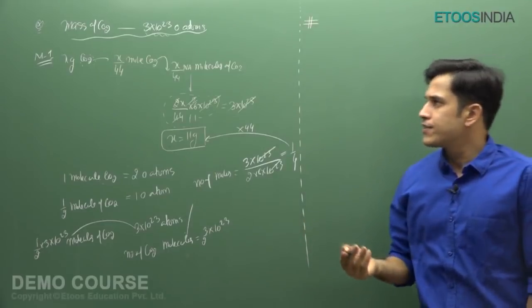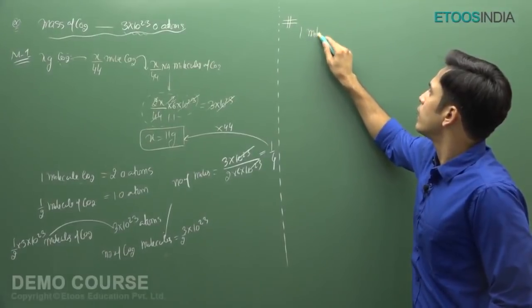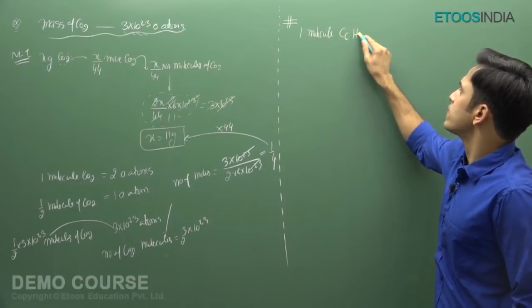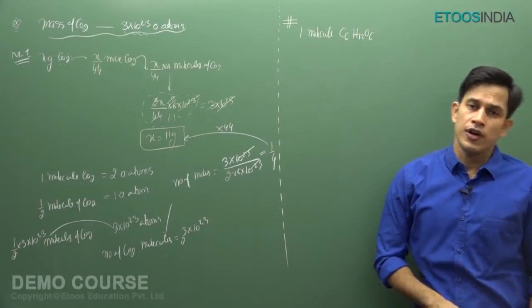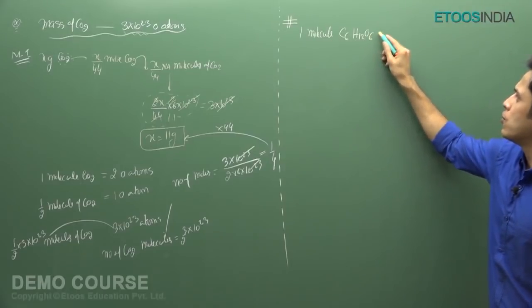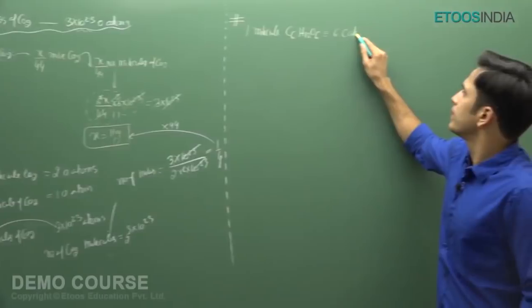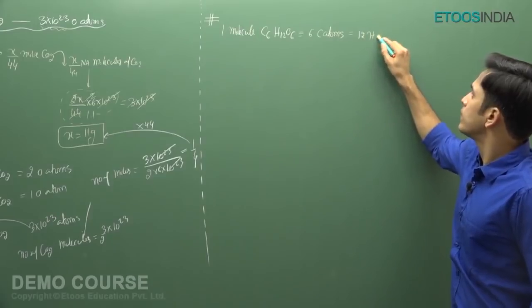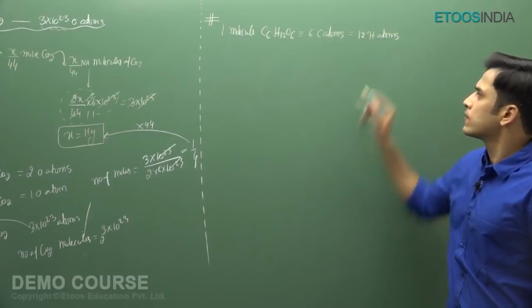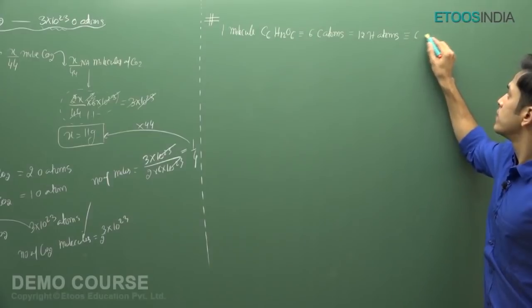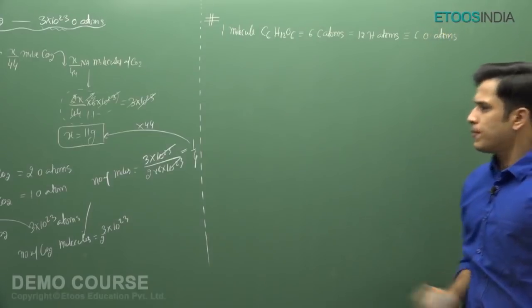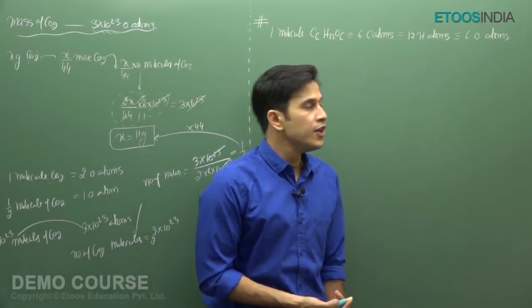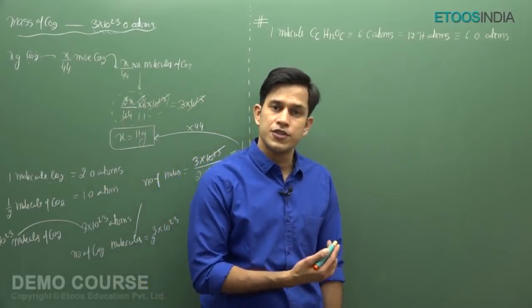What is this method? If I say I have one molecule of glucose, C6H12O6, then as you can see, in one molecule of glucose you have 6 carbon atoms, 12 hydrogen atoms, and 6 oxygen atoms. This is the basic picture — if you have one molecule of glucose, it contains 6 carbon atoms, 12 hydrogen atoms, and 6 oxygen atoms.